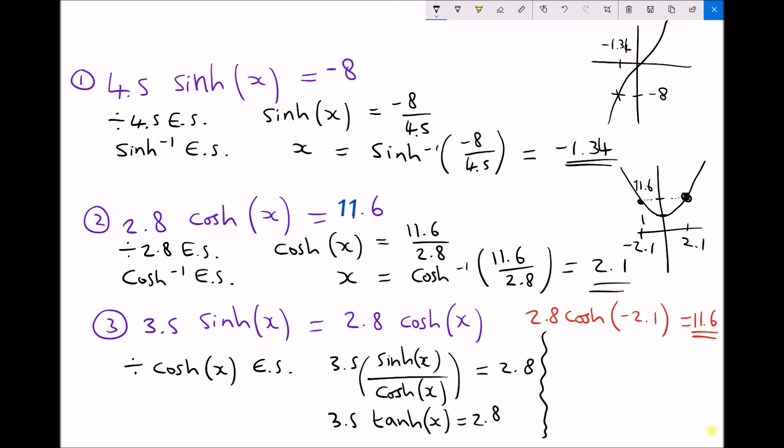Now if I'm trying to isolate x or get x on its own, my next step has to be to divide each side by 3.5. And that will isolate the hyperbolic tan of x. So hyperbolic tan of x is 2.8 over 3.5. Next, I need to take the inverse hyperbolic tan of each side. And I'll be left with x equals inverse hyperbolic tan 2.8 over 3.5. And when I run that through my calculator, I get a value of x equal to 1.1.